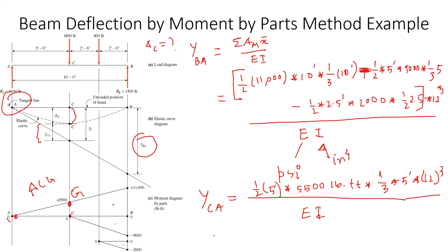Now once we know that, we can calculate Y_C by comparing these two triangles. Comparing these two triangles, we can calculate Y_C as 5 by 10 times Y_BA. So now we know Y_C and Y_CA, so we can easily calculate delta C is equal to Y_C minus Y_CA. That's the answer.